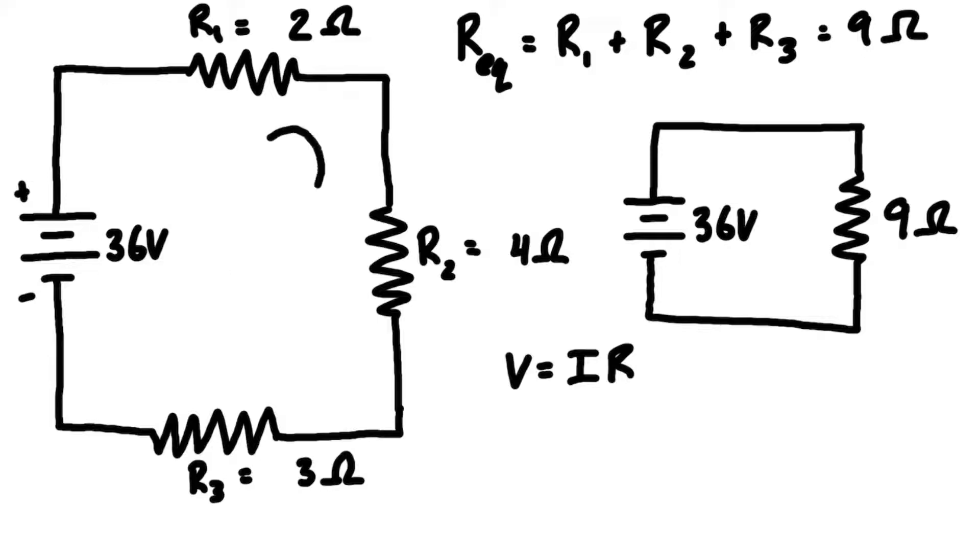Looking at the current, it is going clockwise around the loop. We're talking about conventional current here, so it flows from the positive terminal around the circuit back to the negative terminal of the battery.